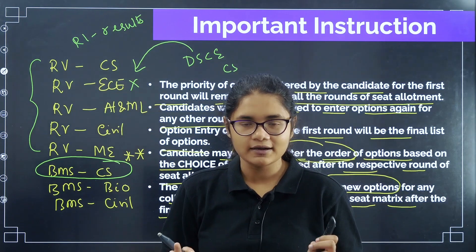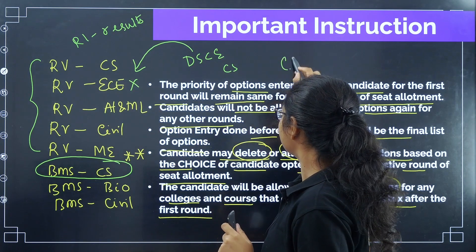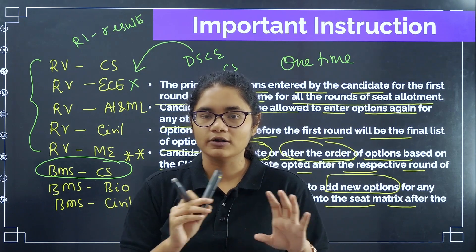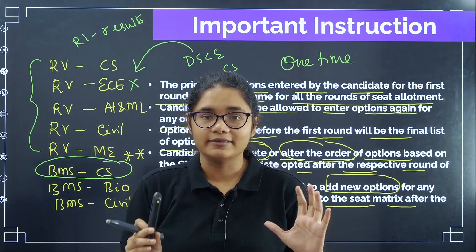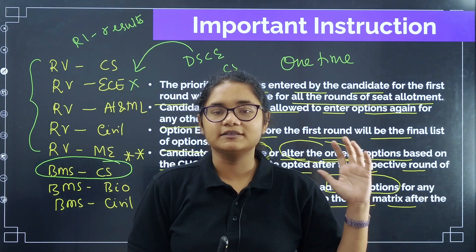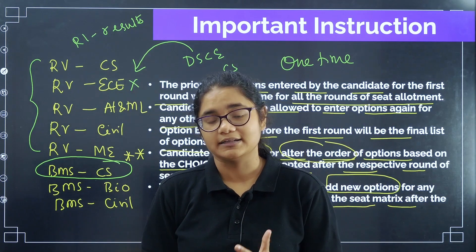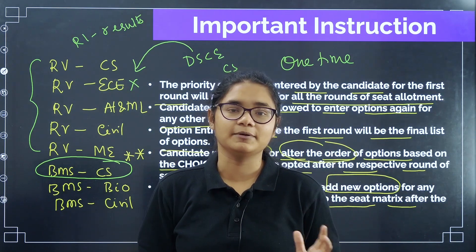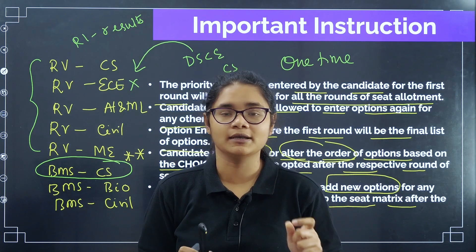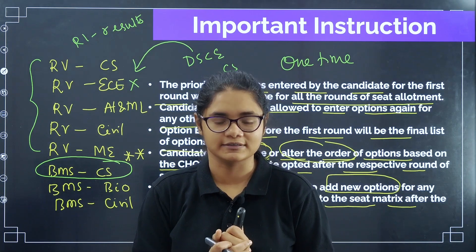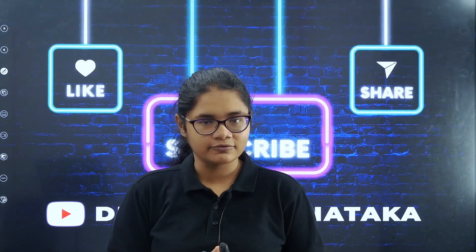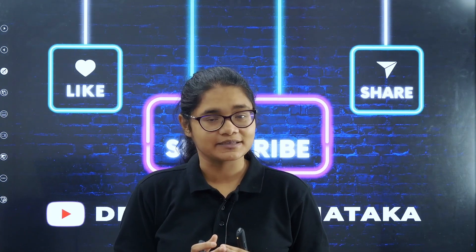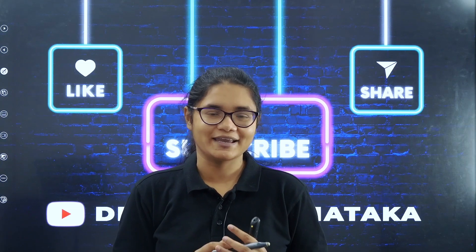I hope this is very clear. Please remember, this is one-time option entry — very important. So try to do as much research as you can, research all the colleges, and then put as many colleges and courses as you can, so that your chances of getting a seat increase. List down all the colleges and be very prepared for the option entry. This is going to be one of the very, very important steps of the counselling process. I hope this video was helpful. If you have any doubt, please comment down and we'll definitely address it. Thank you for watching and please subscribe to the channel for more updates. All the very best for your KCET counselling.